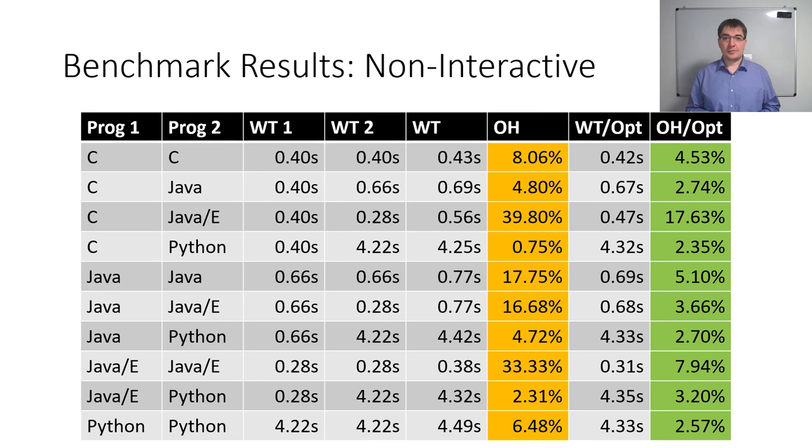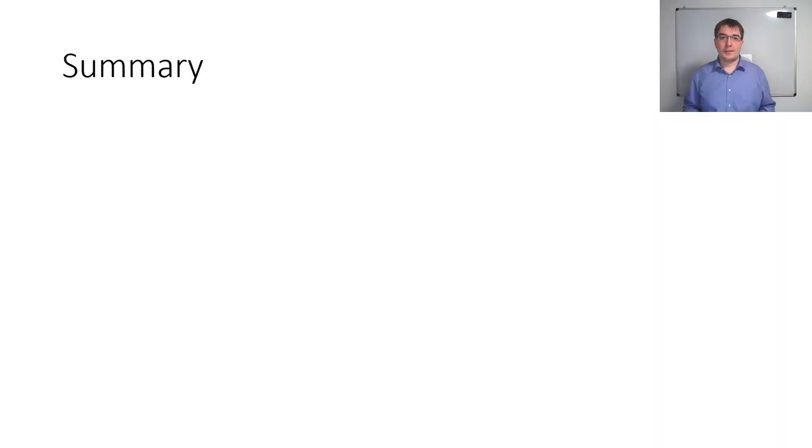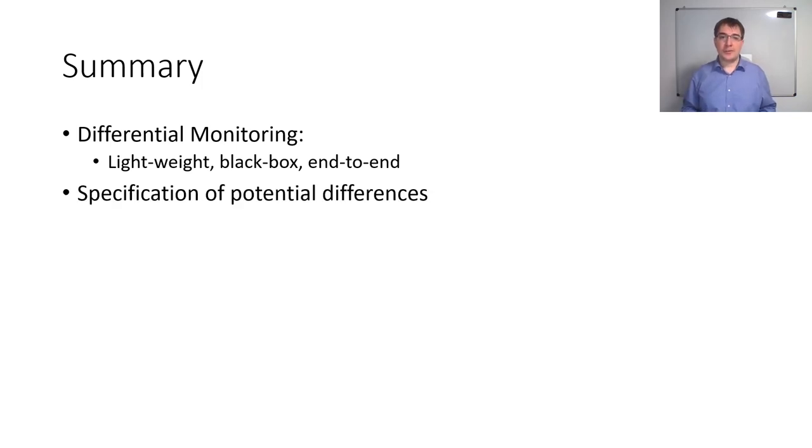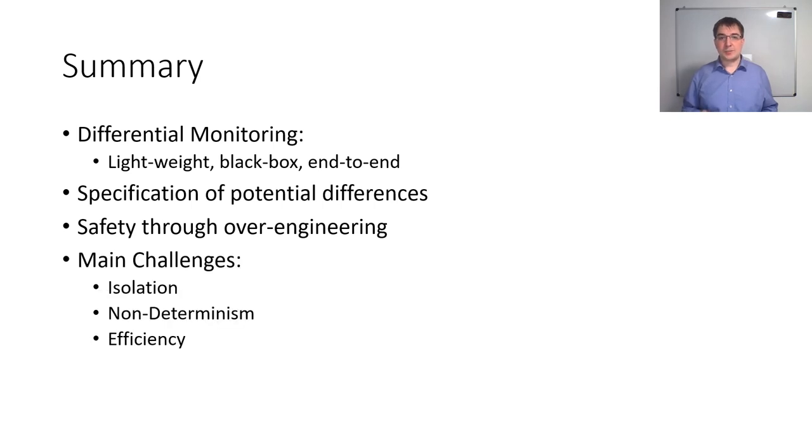In summary, differential monitoring is a lightweight, black box, end-to-end runtime verification technique that turns the traditional formal specification effort on its head by requiring at most a specification of where actual programs may differ. As such, it provides a relatively simple way to increase program safety through overengineering. In order to make it a reality, some challenges remain. In particular, guaranteeing isolation, dealing with non-determinism and all the while staying efficient. We believe that these challenges can be overcome, which would add a simple yet powerful technique to the runtime verification toolbox. Thanks for watching.